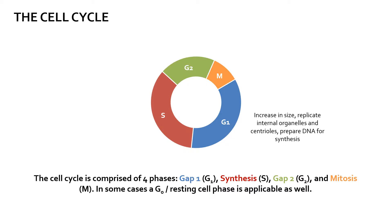The first phase, G1 or GAP1, is a phase where the cell increases in size, replicates its internal organelles and centrioles, and prepares for DNA synthesis.